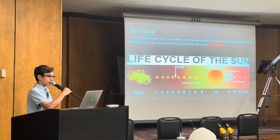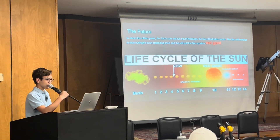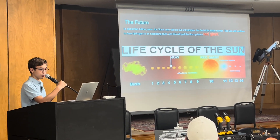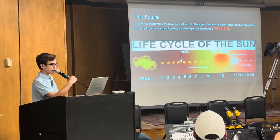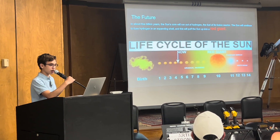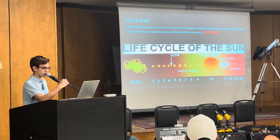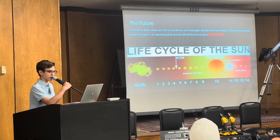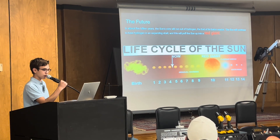In the future, in about five billion years or so, the sun's core will run out of hydrogen — the fuel of its fusion reactor. The sun will then turn into a red giant, which will destroy Earth, and after that it will turn into a white dwarf following a planetary nebula phase.